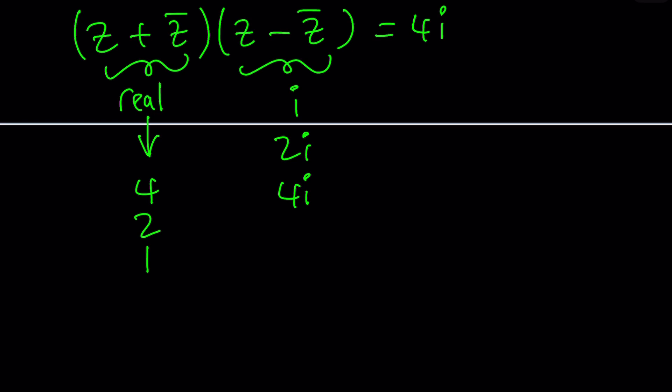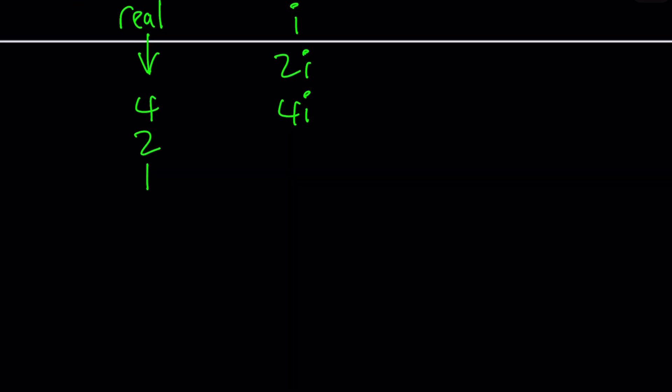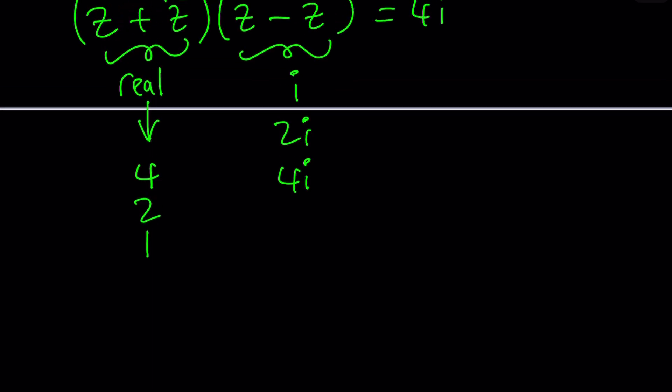I mean, z plus z bar can also be 8. And then maybe their difference will be half i. I mean, half of i. What is half of i? One half times i. That's what I meant. You can't really cut i in half, can you? Maybe you can. In complex words, everything is possible. So let's go ahead and test these cases.